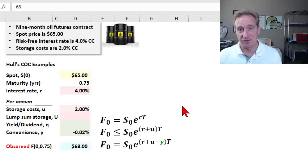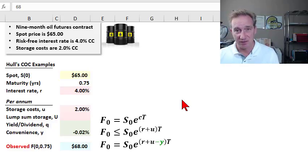The convenience yield is an intangible benefit of ownership that confers a benefit to the owner of a consumption commodity, like crude oil, that I'll illustrate in this example.